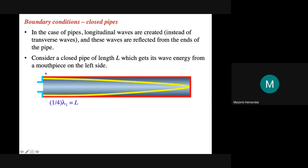The length of the closed pipe equals one-fourth of the wavelength. Remember, for a complete wavelength you need two bumps, but this shape is just a quarter of a bump. So the length is equivalent to one-fourth of the wavelength. Plugging that into the wave speed equation, the fundamental frequency is V over 4L.